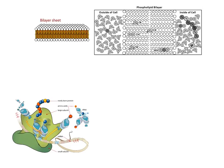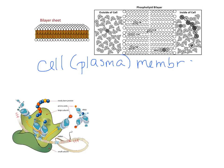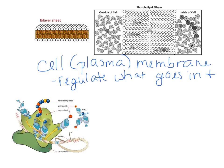The cell or plasma membrane is found on all kinds of cells — prokaryote or eukaryote. The cell membrane's job is to regulate what goes in and out of the cell. Only certain molecules are able to get across it. If the cell membrane cannot regulate what goes in and out — or if it has any kind of hole or tear in it — the cell will not survive.